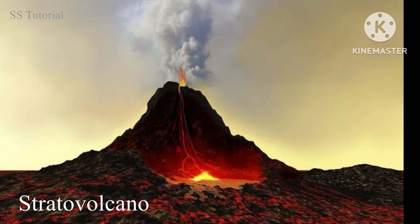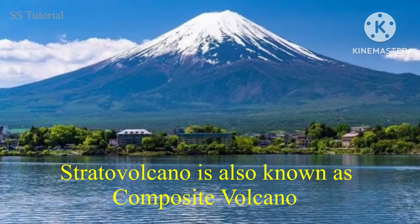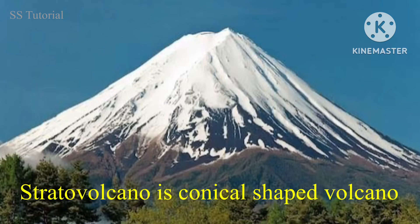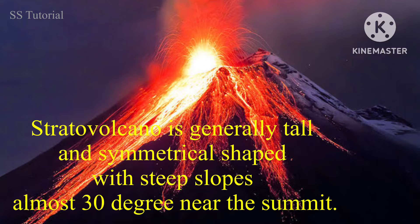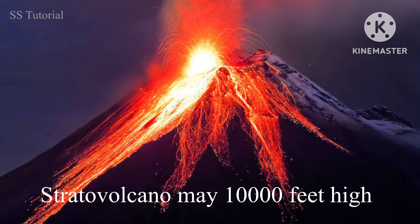Strato volcanoes are also known as composite volcanoes. They are conical shaped volcanoes made up of many strata or layers. They are tall and symmetrically shaped with stiff slopes of almost 30 degrees near the top, and sometimes they may be 10,000 feet high.